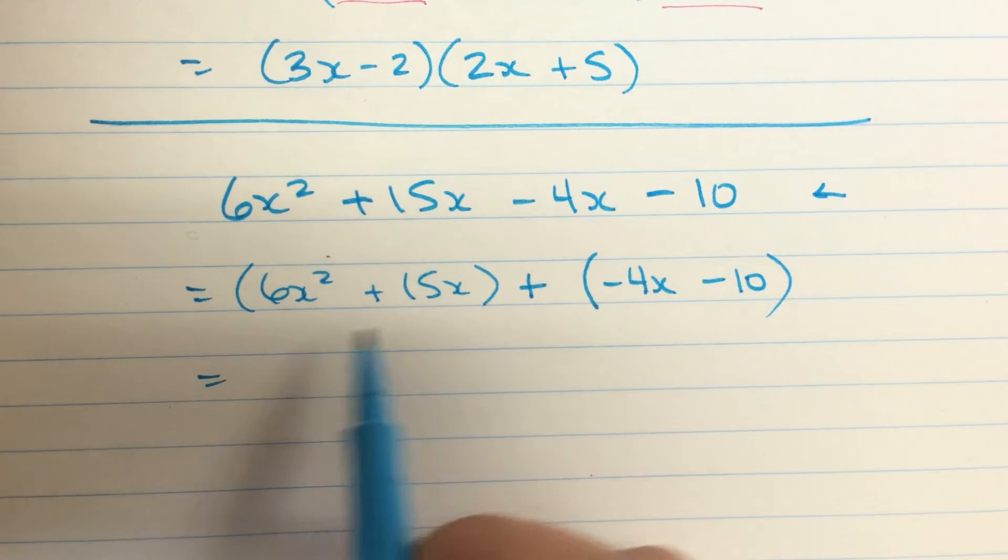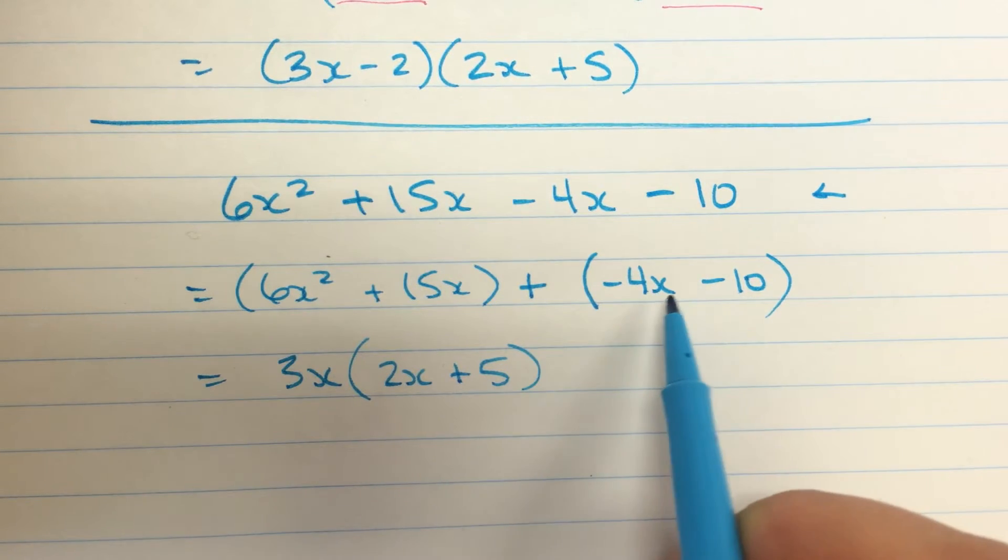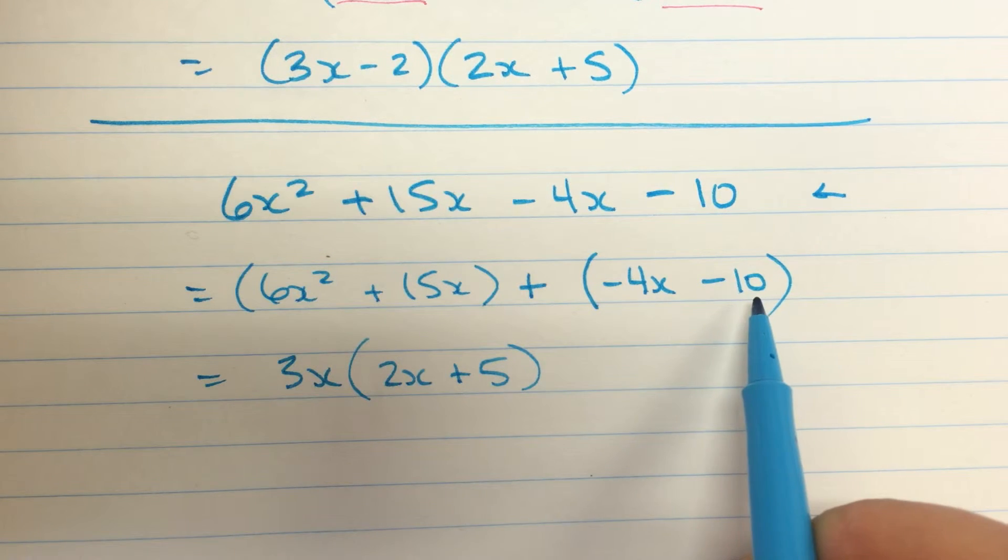Now I'll factor this guy. I can take out a 3 and an x. I'll be left with 2x plus 5. And then over here, I can take out... Looks like I can take out negative 2. And that's all.